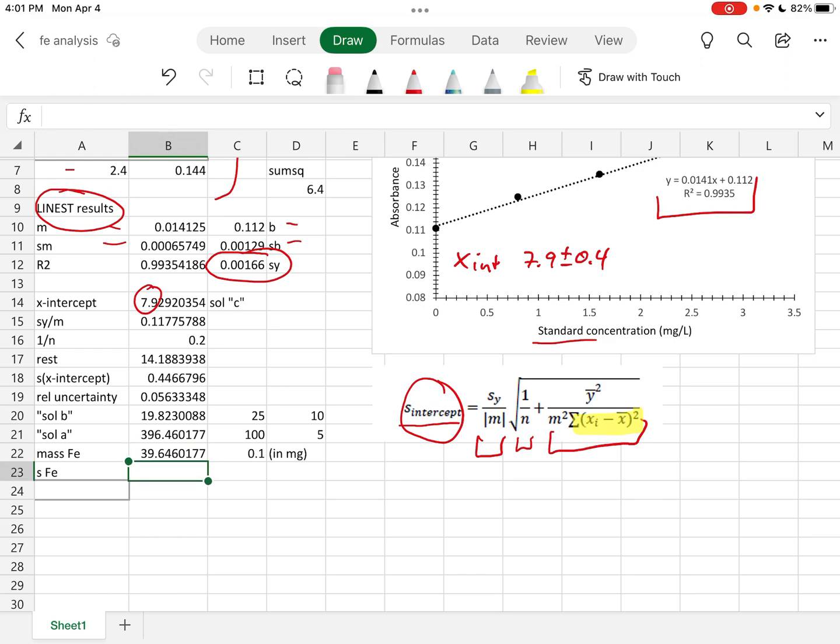Now we need the error, the plus or minus for that value. I said that the relative uncertainty in the mass is equal to the relative uncertainty of the x-intercept.